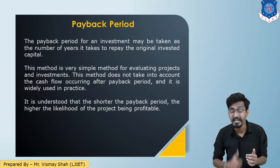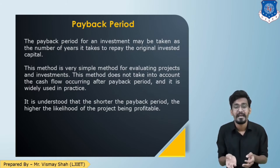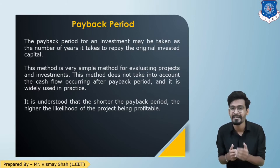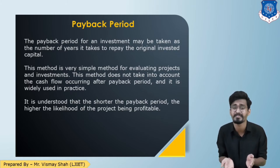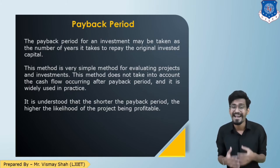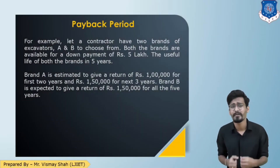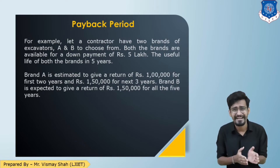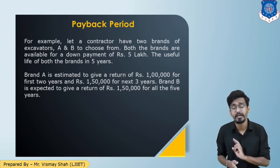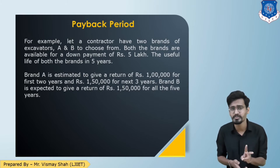The logic is: in what time are we getting back what we invested — that should be the shortest time. For example, if I invested 5 lakh rupees and in one alternative I get a return in 2 years while in the second alternative in 5 years, I should select the one with the lesser payback period. Let us take an example: as a contractor we need to select a JCB or excavator — brand A or brand B — both requiring an investment of 5 lakh rupees.